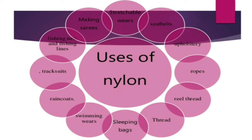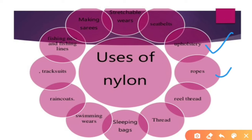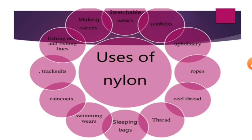Nylon — New York and London origin. It is the first complete synthetic fiber. Its uses include: saris, stretchable wear, seat belts, upholstery, ropes, thread, sleeping bags, swimwear, raincoats, track suits, fishing lines, and many more.